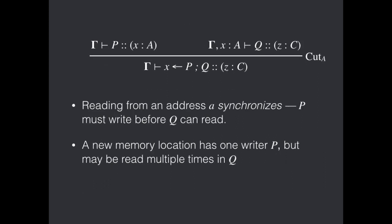Now, two things arise from this. The first one is maybe a little bit obvious, but it's important to note that reading from an address is a synchronization point. We can't read from the address or from the memory cell before it's been written to. So while we can run P and Q in parallel, P does need to terminate before Q can actually go and read from that cell.